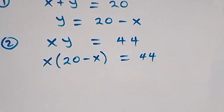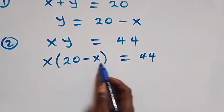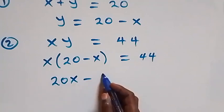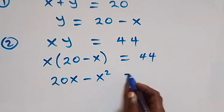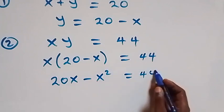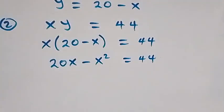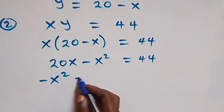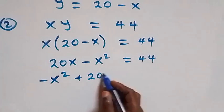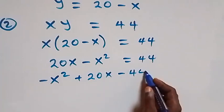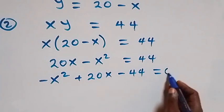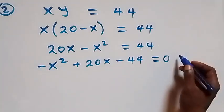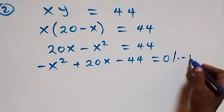Opening this bracket gives us 20x minus x squared equals to 44. Taking 44 to this side and rearranging, we have minus x squared plus 20x minus 44 equals to 0. To remove this negative sign, we multiply through by minus 1.